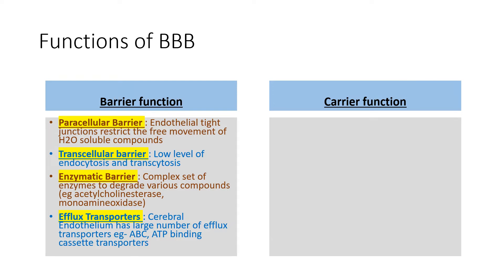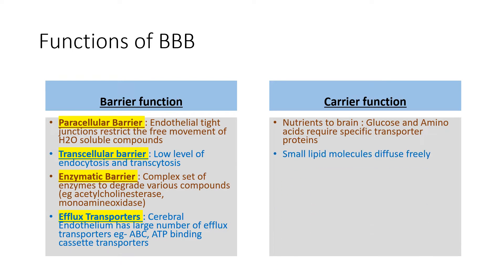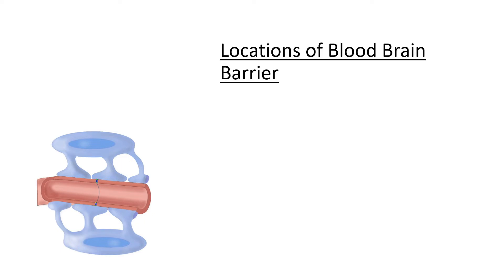The carrier function supplies all nutrients to the brain via the blood-brain barrier. Glucose and amino acids enter the brain using specific transporter proteins like GLUT1, GLUT2, GLUT3, and GLUT4. Lipid molecules can diffuse freely into the brain interstitium, and oxygen and carbon dioxide also diffuse passively. The blood-brain barrier also facilitates removal of metabolites produced by processes inside the brain.